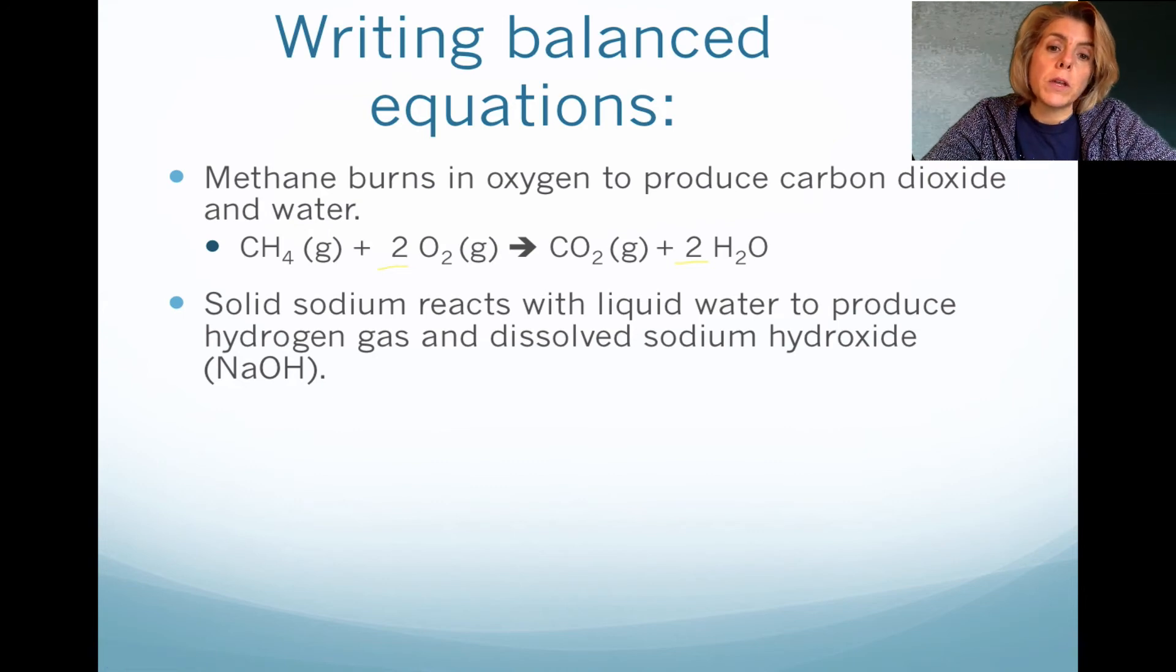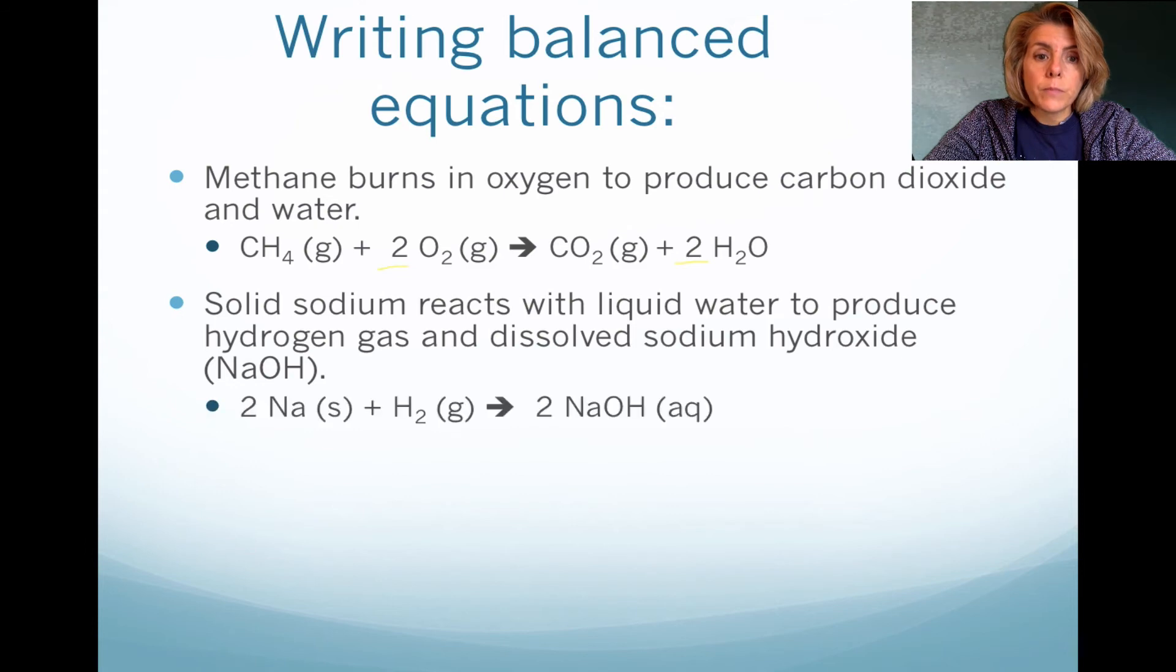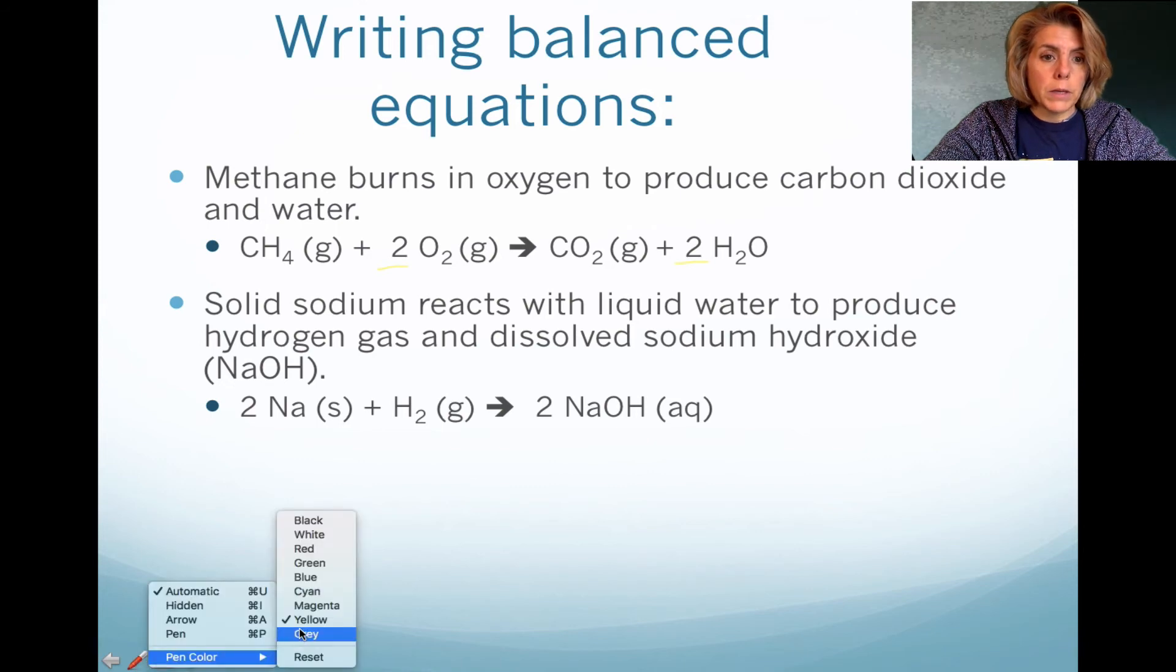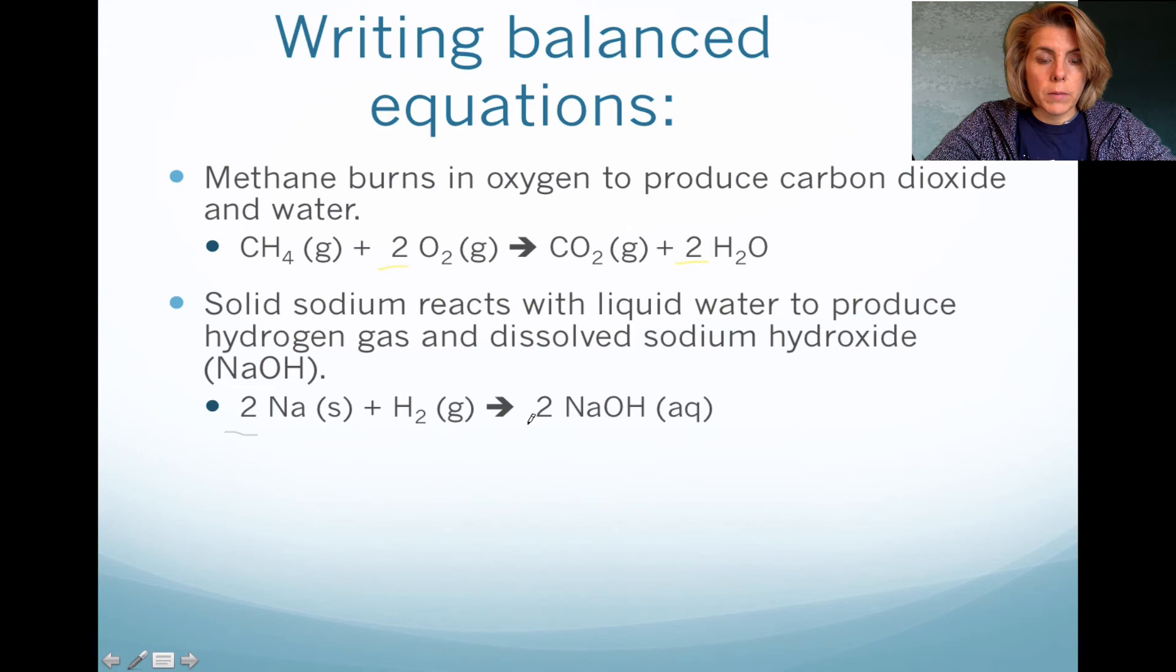Here's another example where we have sodium, and it's solid. So you want an S after the name, and it reacts with liquid water to produce hydrogen gas and dissolve sodium hydroxide. So here, we would have to write the skeleton equation, and that would be missing the 2 in front of sodium and the 2 in front of sodium hydroxide. Now, the way I count it is there's 2 hydrogen here. So as a result, I have to put a 2 in front of NaOH because 2 times 1 gives me 2 hydrogen. Now, because I put a 2 in front of NaOH, I have 2 sodium as a result of it, and I want to put another 2 on this side to balance out the number of sodium.